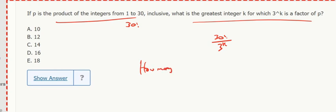If something's divisible by 3 to the 10, it has 10 3's in it, or more. So this is asking how many 3's. Well, where do we get 3's? From every multiple of 3, right?